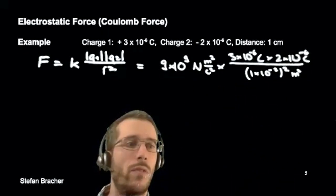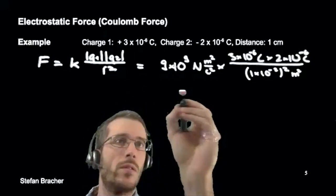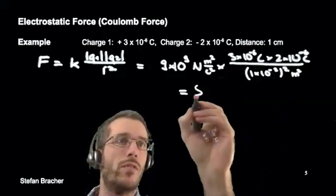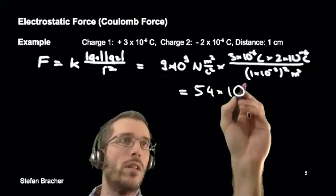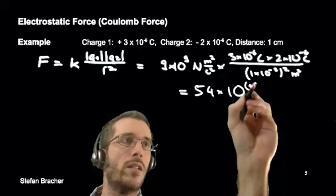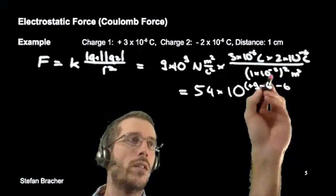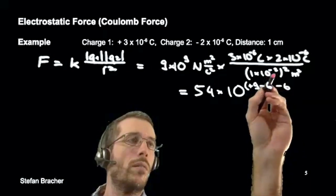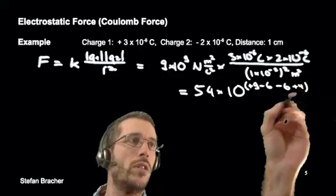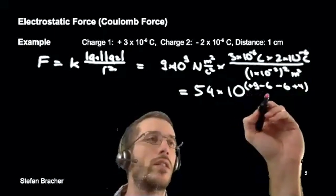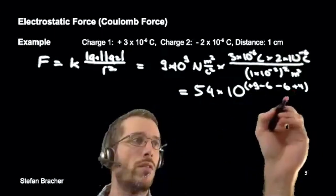And what we are left with is 9 times 3 times 2 is 54 times 10 to the plus 9 minus 6 minus 6 minus 4 plus 4 plus 4. So 9 minus 6 is 3 minus 6 is minus 3 plus 4 is 10 to the 1.